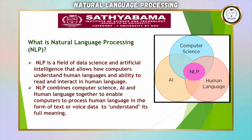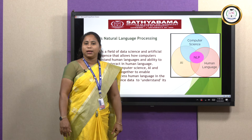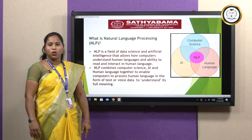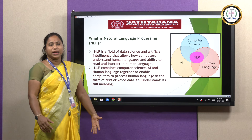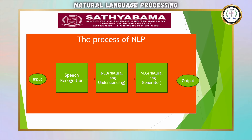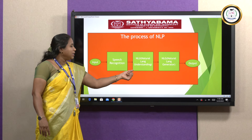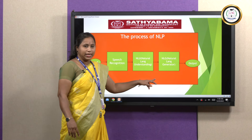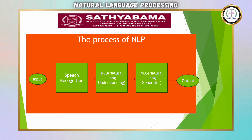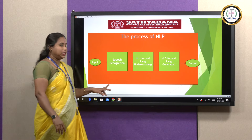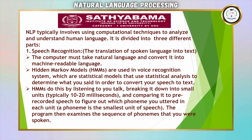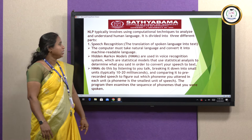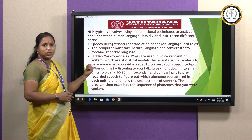Human language is the natural language that human beings speak. Computer science has many computational algorithms and programs, and AI has many machine learning models and statistical models to define the data. NLP mainly comprises three important steps: speech recognition, natural language understanding, and natural language generation. These are the three prime steps involved in NLP, and NLP physically involves various computational techniques to analyze and understand human language.